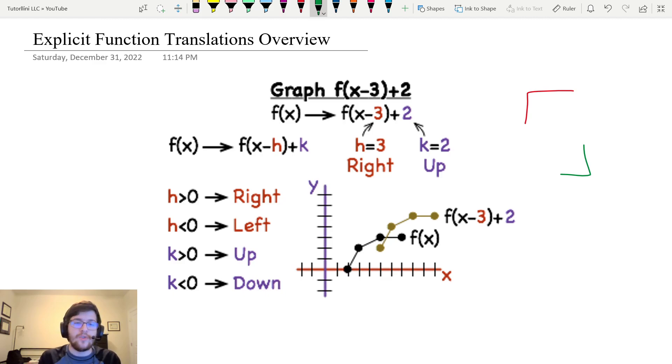So you want to know this general expression that sums up a function translation using function notation. We can take a function f(x) and translate it using the expression f(x-h)+k. So h is your left-right. When h is positive, that means you're moving it to the right. When h is negative, that means you're moving it to the left.